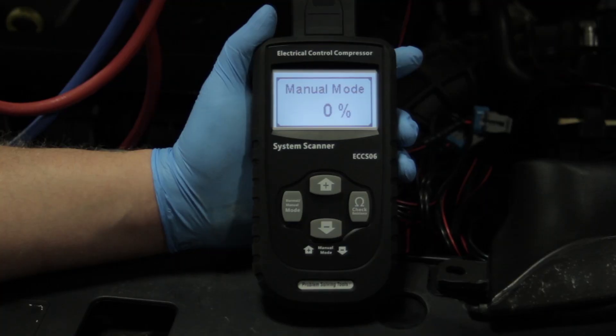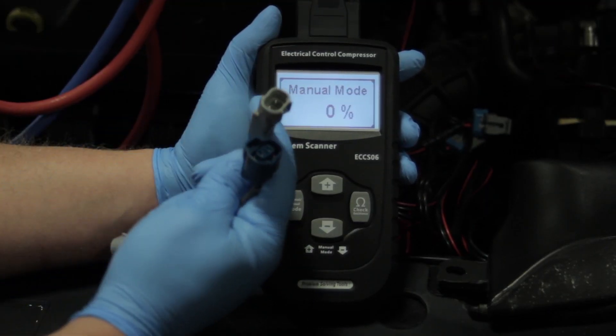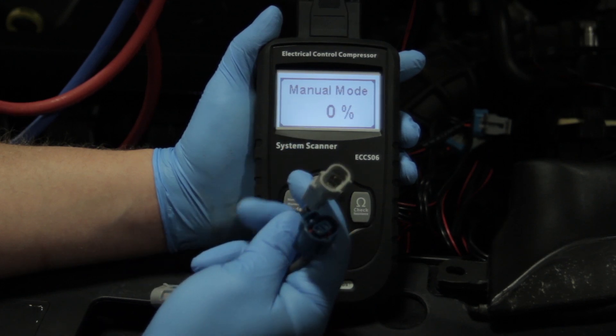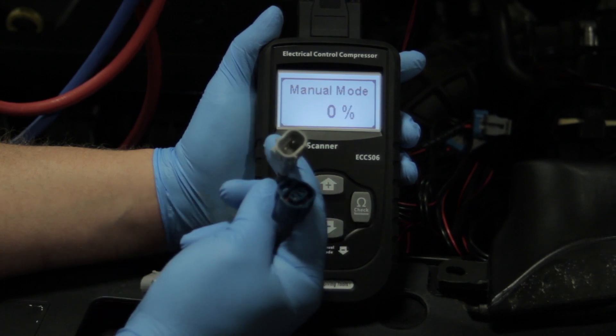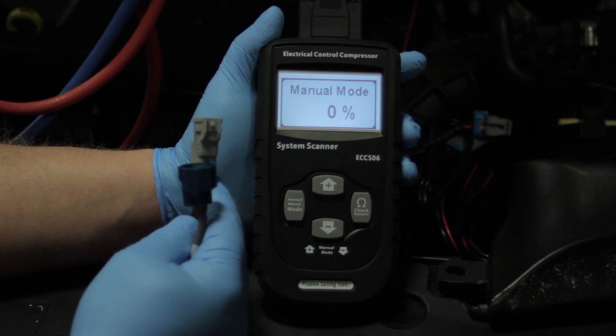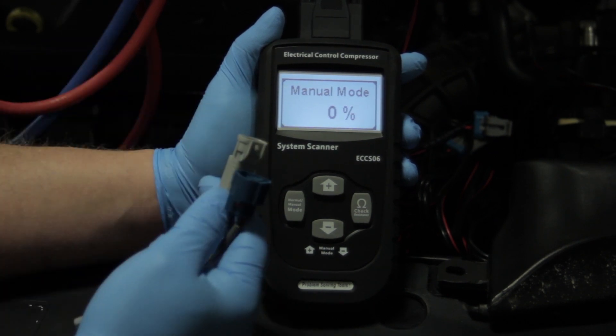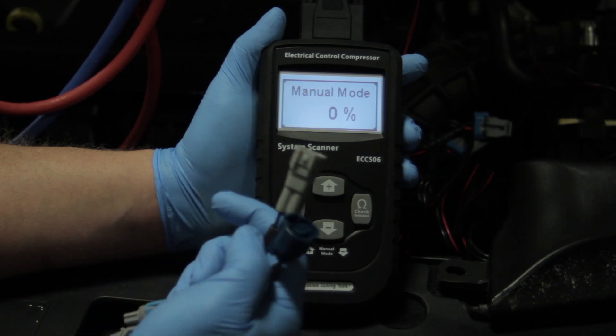And next thing I need to do is determine the male and female connectors which are applicable for this particular vehicle. So I've already done my homework here, see I've got the two connectors. In a minute we're going to go down to the compressor, disconnect the solenoid, I'm going to plug one of these into the solenoid, one of them into the vehicle's harness, and then I'm going to plug them into the tool here.